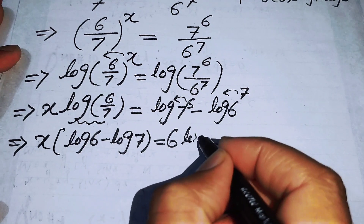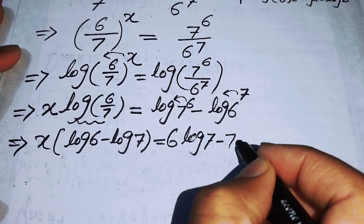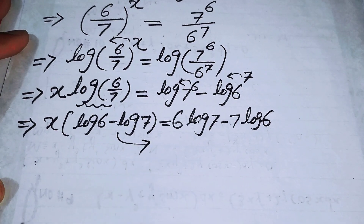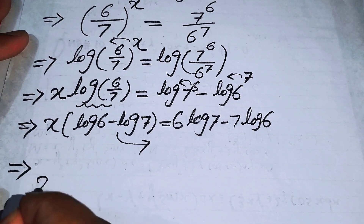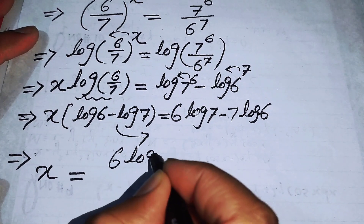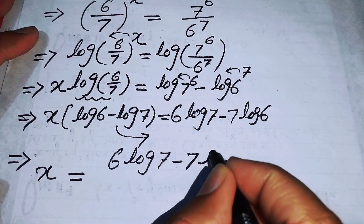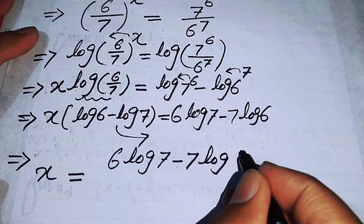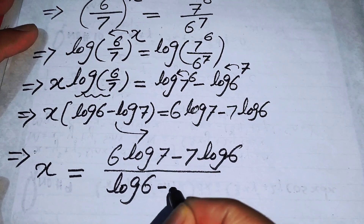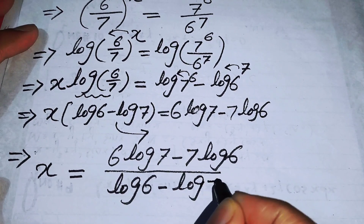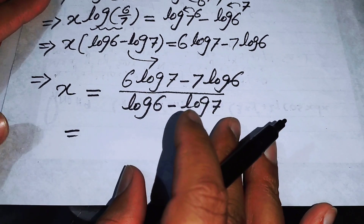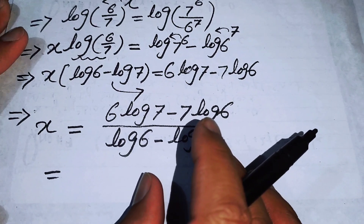We move this term to the right-hand side, so x equals 6 times log 7 minus 7 times log 6, all over log 6 minus log 7.